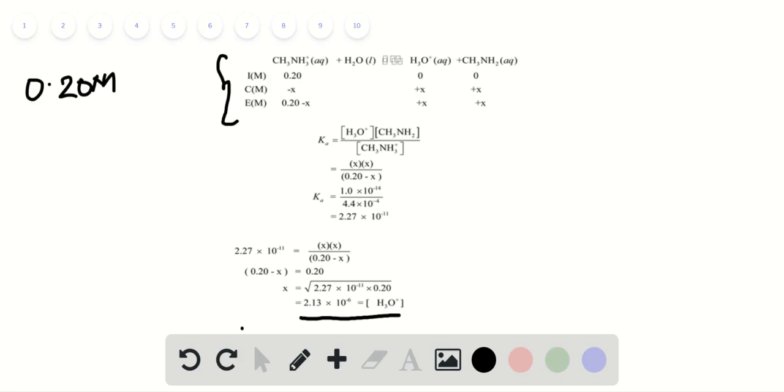Now we determine the pH. pH equals negative log of hydronium ion concentration.